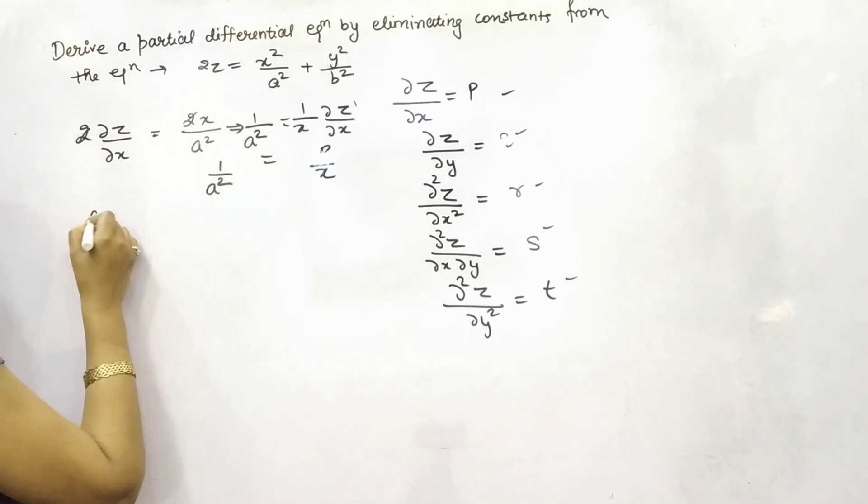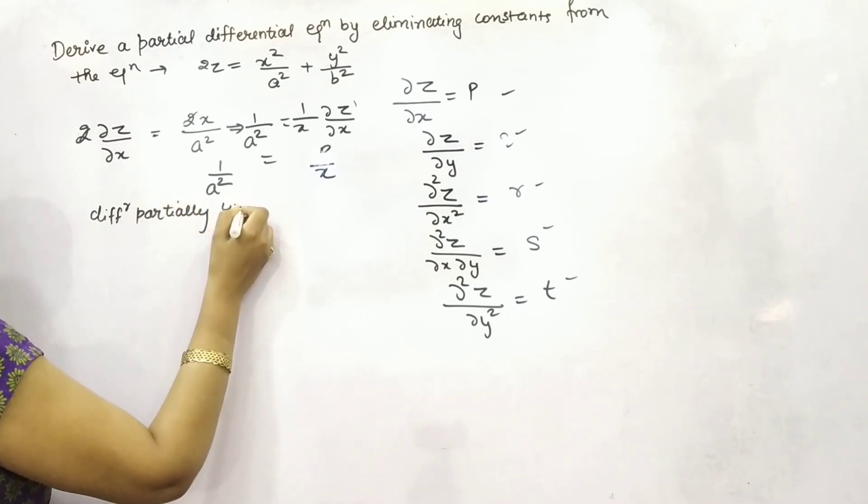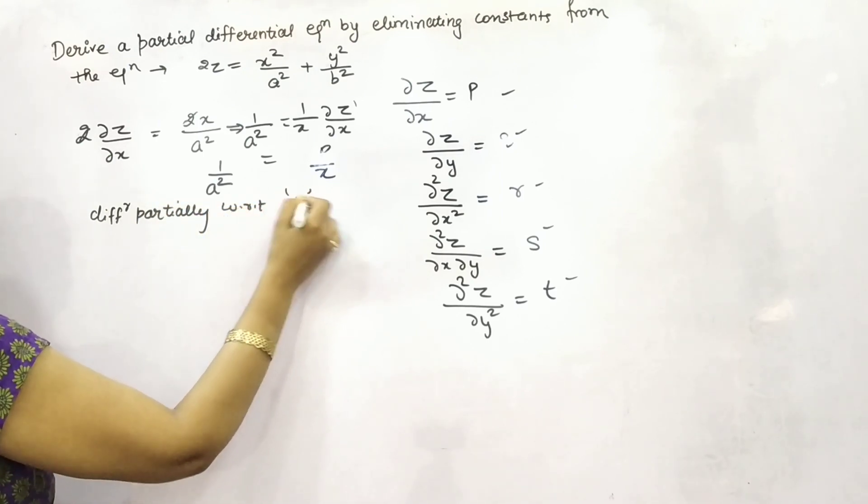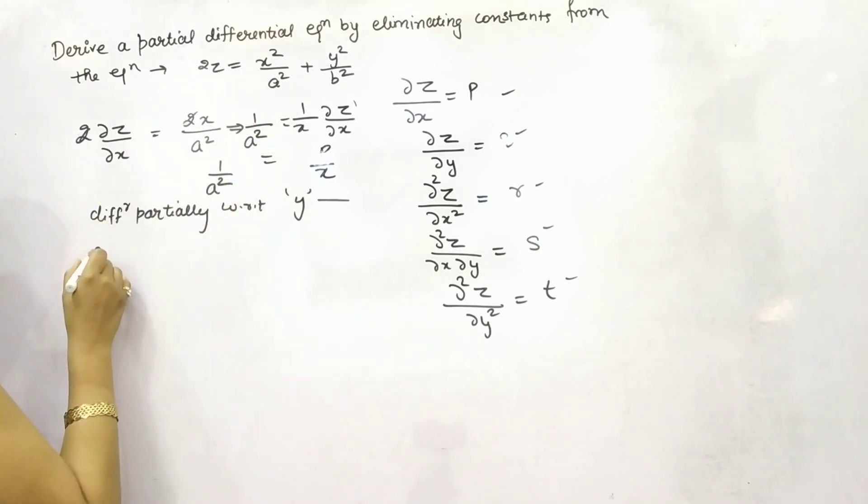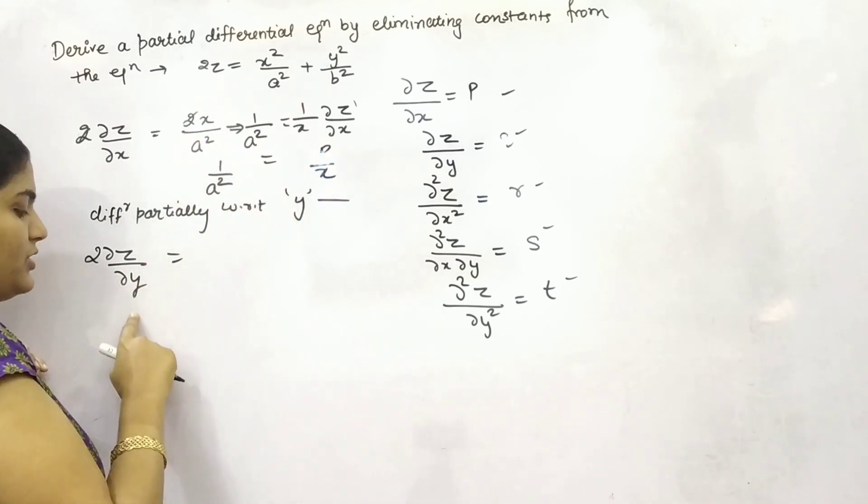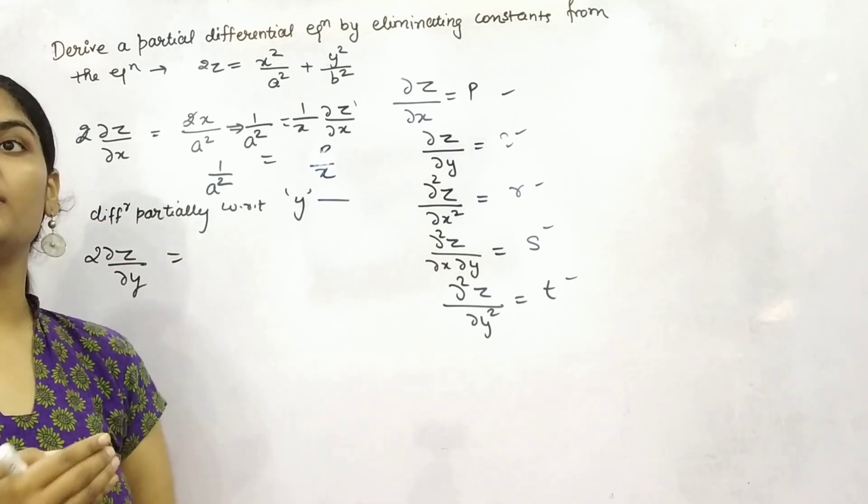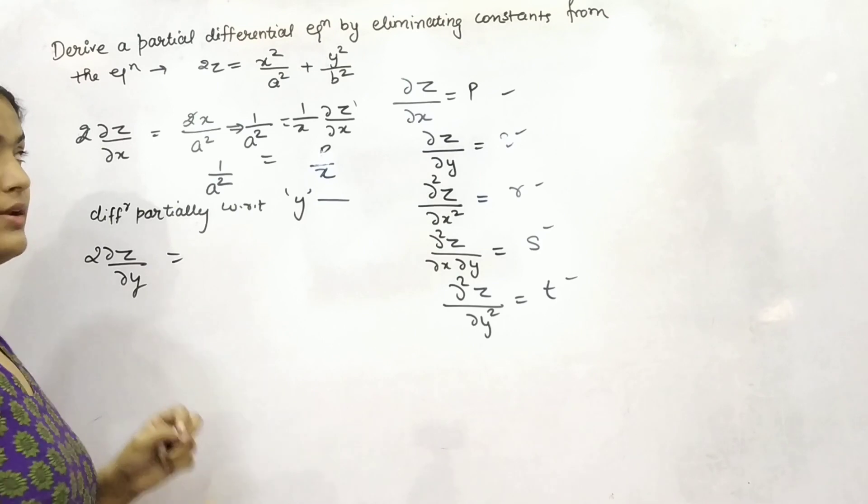Similarly if you differentiate partially with respect to y, so it will be 2 partial differentiation of z with respect to y. And your x square by a square will be 0 because you are differentiating with respect to y. That means you are keeping x constant. And differentiation of constants is 0.